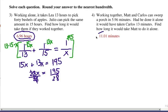Number four. Here's our answer and here's how you get it. Working together, Matt and Carlos can sweep a porch in 5.96 minutes. That's going to be the right side of the equation, 1 over 5.96. That is how long it takes them together.